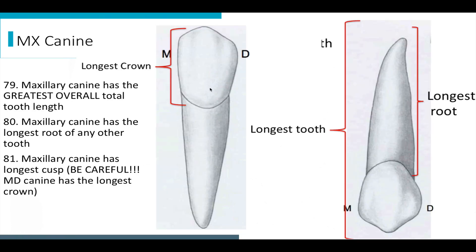Now we're going to get into some very commonly tested topics — you can almost guarantee these will be on your test. The maxillary canine has the greatest overall tooth length, so it's the longest tooth. It also has the longest root of any tooth — both the longest tooth and the longest root, but not the longest crown. That's going to be the mandibular canine. And the maxillary canine has the longest cusp — comparing the two canines. So be careful: the mandibular canine has the longest crown, but the maxillary canine has the longest cusp.